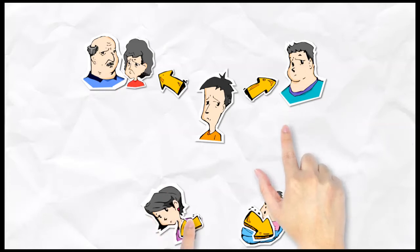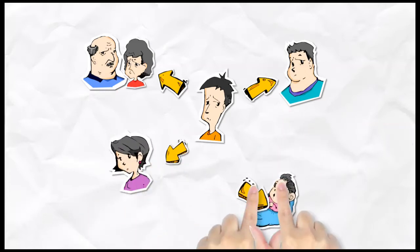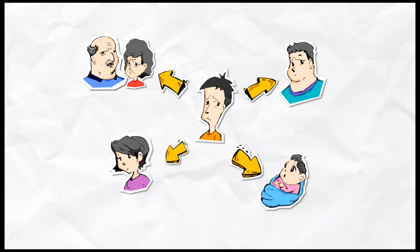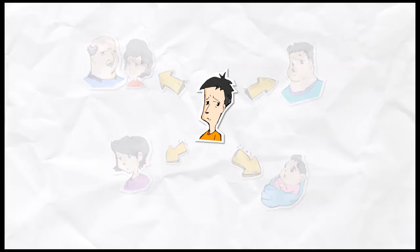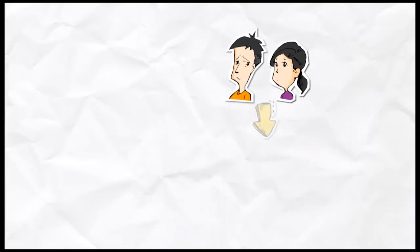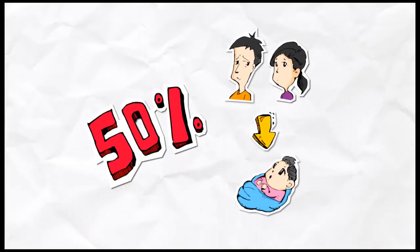A person's first degree relative is defined as a parent, sibling, or child. If one parent has FH, there is a 50% chance of passing it to each of their children.